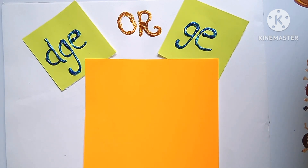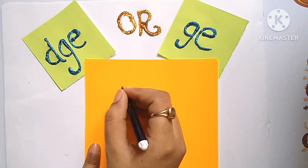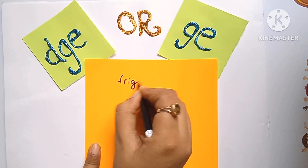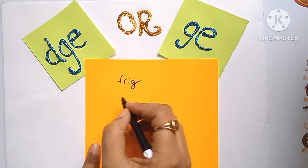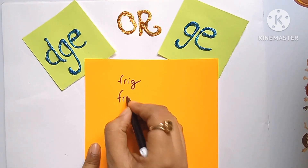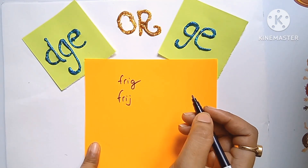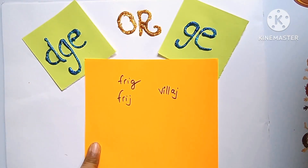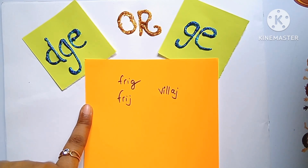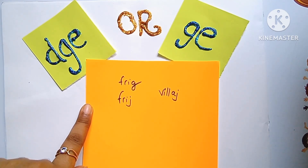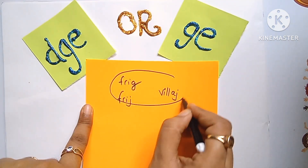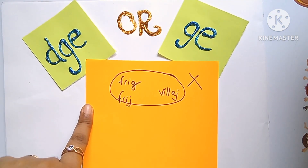Have you all written? Now tell me how many of you have written fridge like this, or like this — fridge and village like this, village. When you have written these words, this class is very important for you, because all these words are wrong spelling.